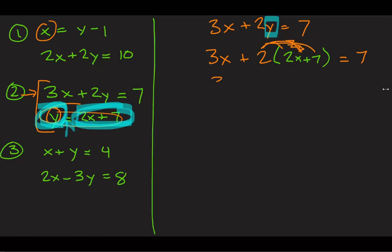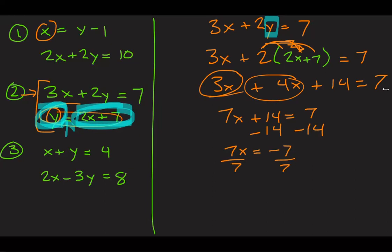3x plus 4x plus 14 equals 7. We have some like terms. 3x and positive 4x is 7x. Subtract 14. Divide by 7. x equals negative 1. So we found part of our answer. We got the x. Now we need to solve for y.